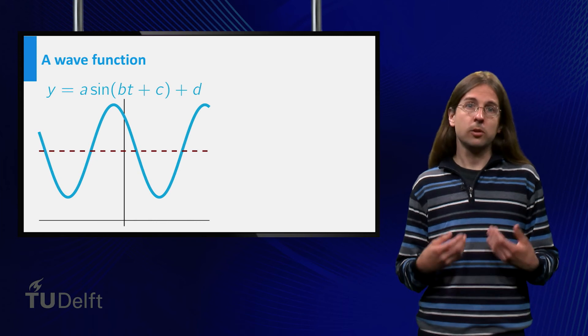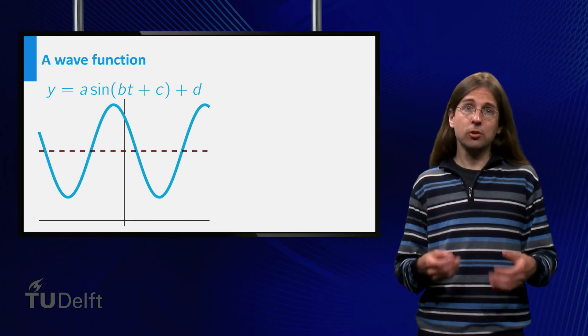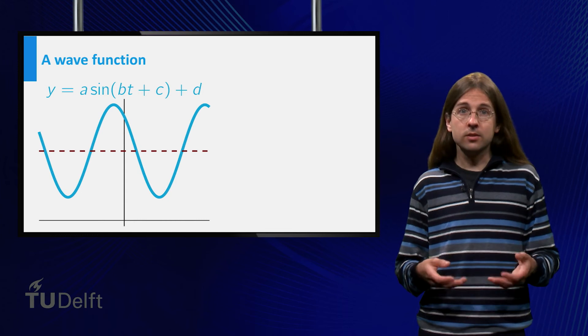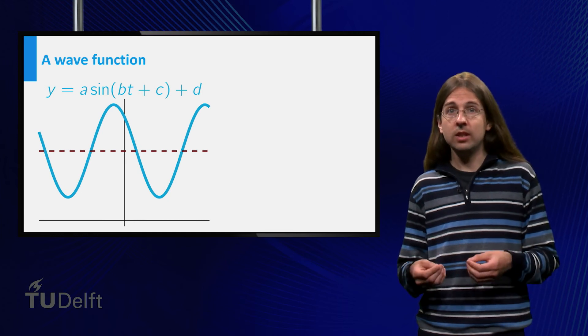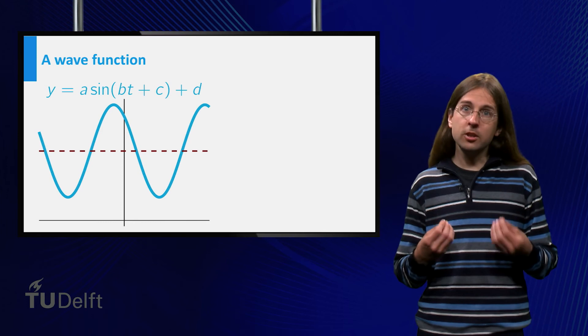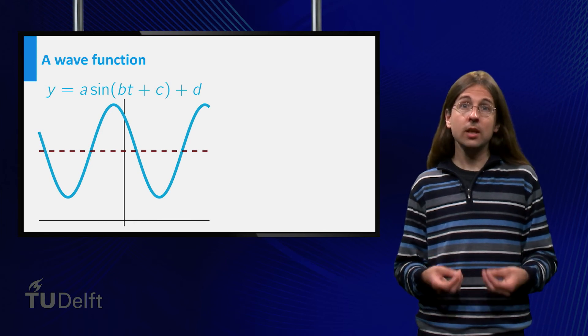The formula for these functions has the form f of t equals a times the sine of bt plus c plus d, where we traditionally think of the variable t as time.